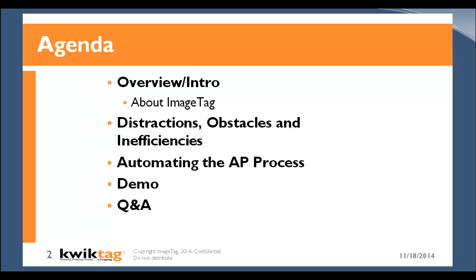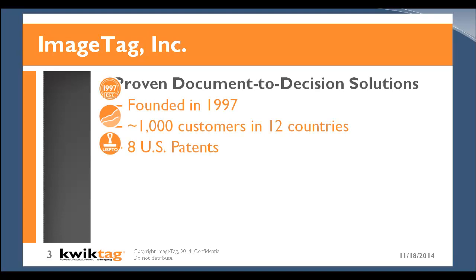We'll have some time at the end for Q&A as well. Just a little bit of background about ImageTag as a company: we were founded in 1997, focused on solving the problems of taking documents that support your business decisions and putting them closer to those decision points. We have over 1,000 customers in 12 countries today and eight U.S. patents related to our technology. Two of those patents were actually secured within the last 18 months, and I'll highlight those two recent patents as I go through the demo today.